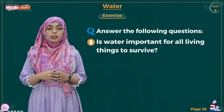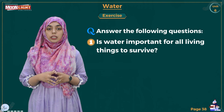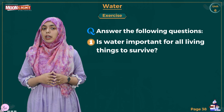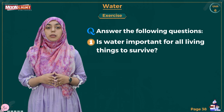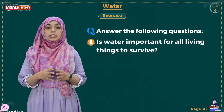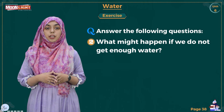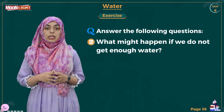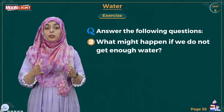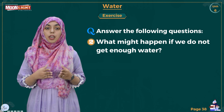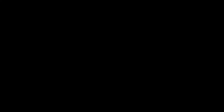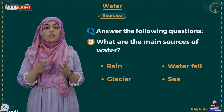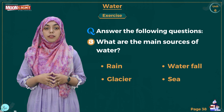Now I will do some exercises on page number 38. Answer the following questions. Question one: Is water important for all living things to survive? Dear children, can we live without water? No, we cannot live without water at all, because water is very essential for our lives. Question two: What might happen if we do not get enough water? People who do not have access to water suffer from many diseases. Those who drink dirty water also suffer from various illnesses, which greatly affects their health. Question three: What are the main sources of water? Number one is rain, waterfall, glacier, sea, and so on.